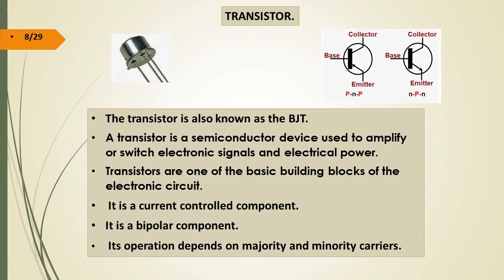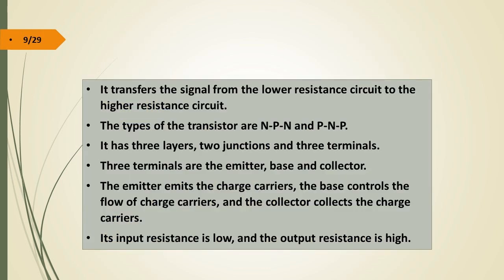Transistor. The transistor, also known as BJT, is a semiconductor device used to amplify electronic signals and used as a switch. Transistors are one of the basic building blocks of the electronic circuit. It is a current control component and a bipolar component. Its operation depends on the majority and minority carriers. It transfers the signal from the lower resistance circuit to the higher resistance circuit.